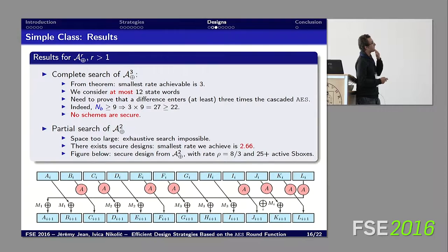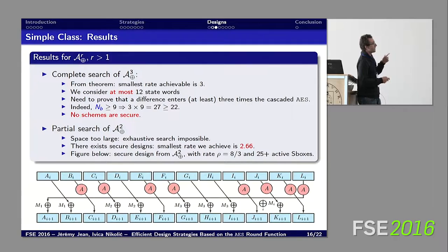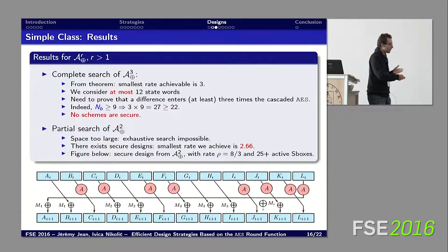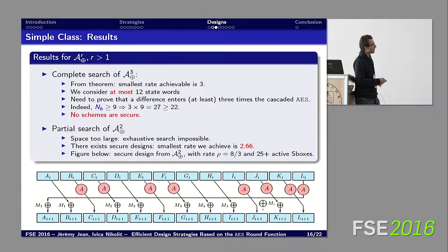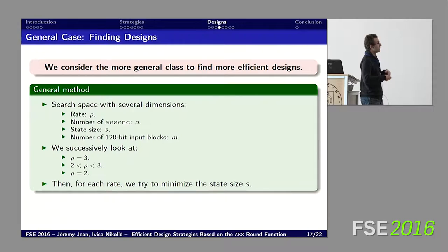In this class, we performed a complete search using three iterated AES rounds limited to 12 state words, finding no secure schemes. Moving to two iterated AES round function calls, the space is too large for exhaustive search, but the most efficient design found has rate 2.66, using eight AES round function calls injecting one, two, and three message blocks. This design can be proven to have at least 25 active AES S-boxes.